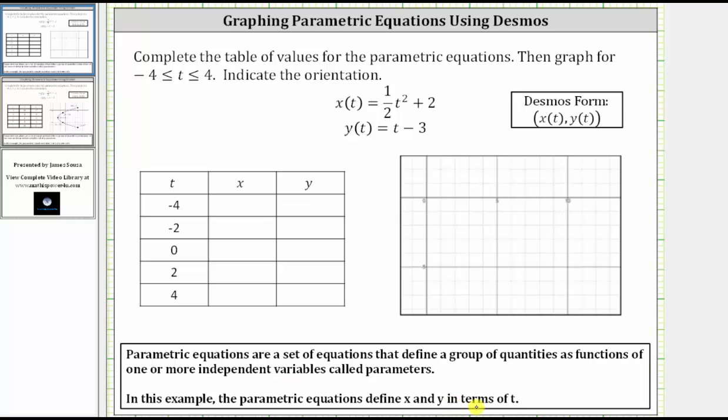We are given x(t) = 1/2 t² + 2 and y(t) = t - 3. We are asked to complete a table of values, then graph the curve for t on the closed interval from -4 to 4, and then indicate the orientation.